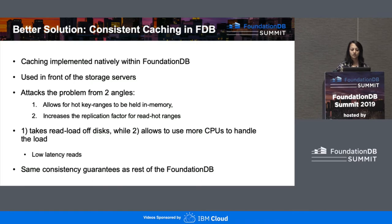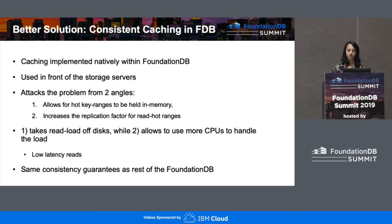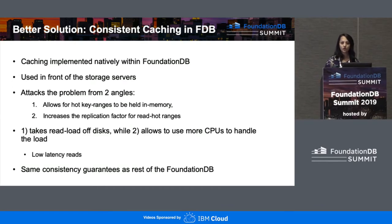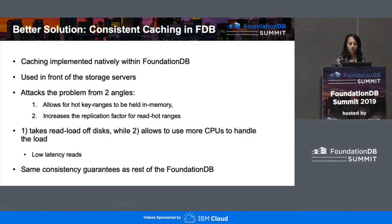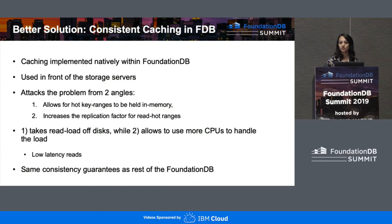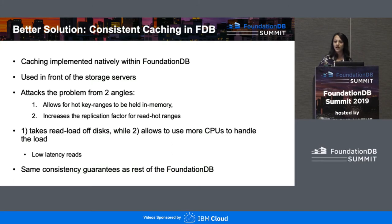Since reads are served from storage servers, this cache will actually sit in front of those storage servers. Consistent caching attacks the problem from two angles. First, it allows certain hot key ranges to be held in memory, taking load off of disks and reducing read latency. Second, it increases the replication factor for those read-hot ranges, allowing more CPUs to handle the load. Both of these factors combined lead to lower latency, which is a good thing.